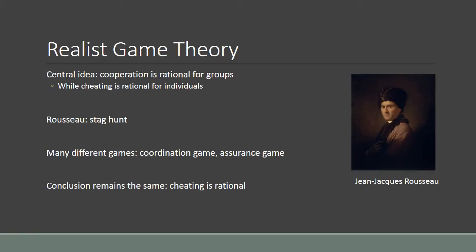In this line of thinking, several forms of games have been developed: chicken game, coordination games, assurance games — all roughly based on the idea that collectively we have an interest in cooperation, but individually we have a very strong inclination to cheat. Not because we're just cheaters, but rather because cheating actually is the rational thing to do.